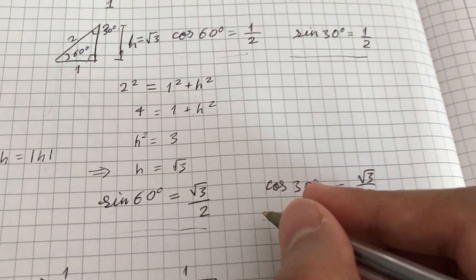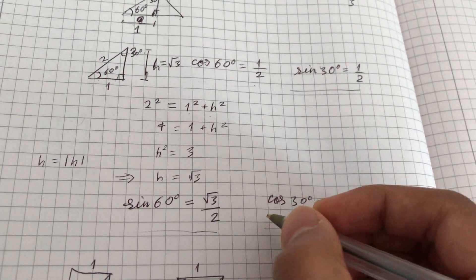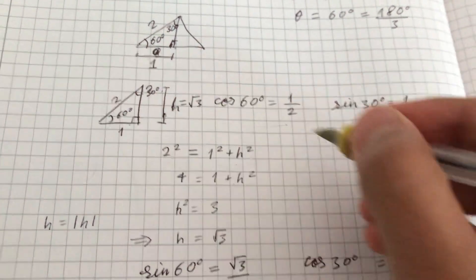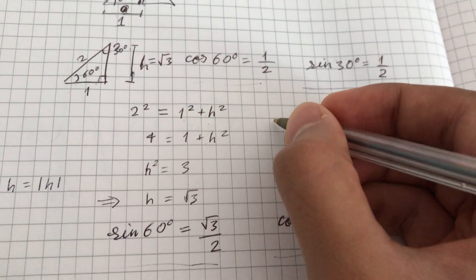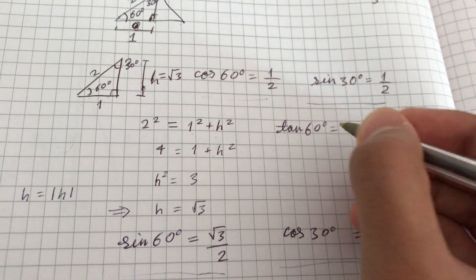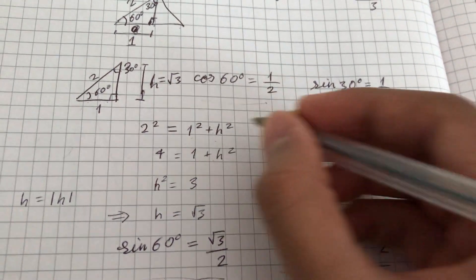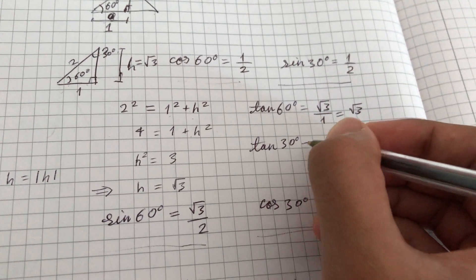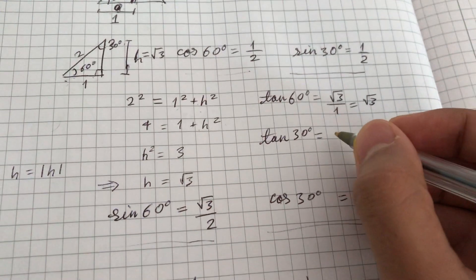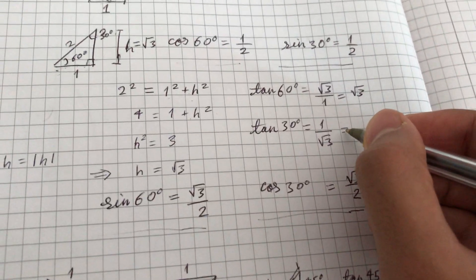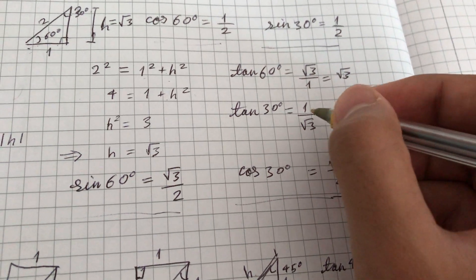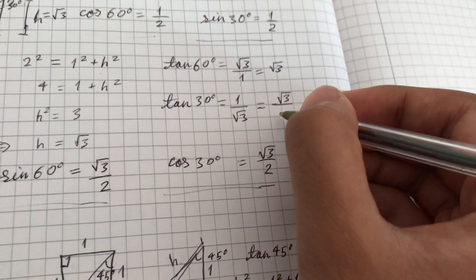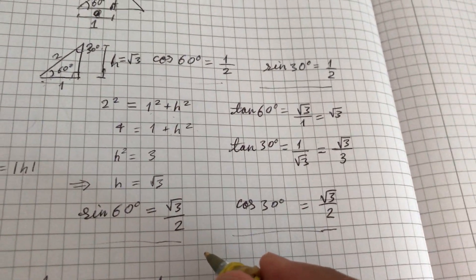Going back to the 30-60-90 triangle: since h equals root 3 and the base is 1, we can find tan of 60 degrees equals root 3 over 1, which is just root 3. And tan of 30 degrees equals 1 over root 3, which can be rationalized by multiplying top and bottom by root 3 to get root 3 over 3.